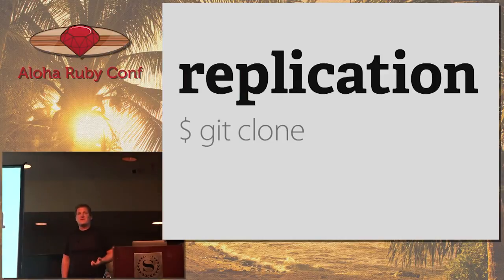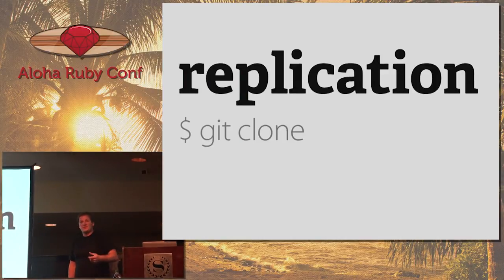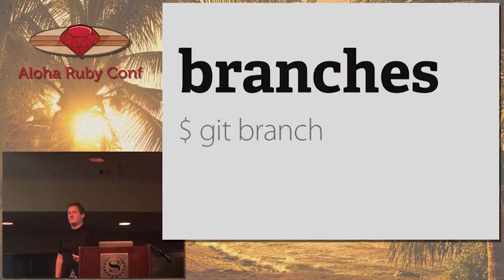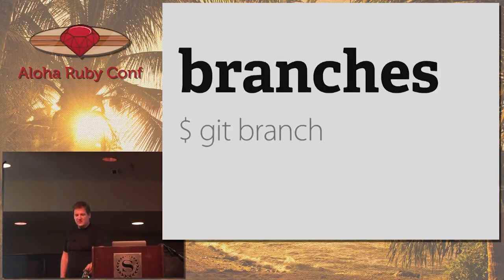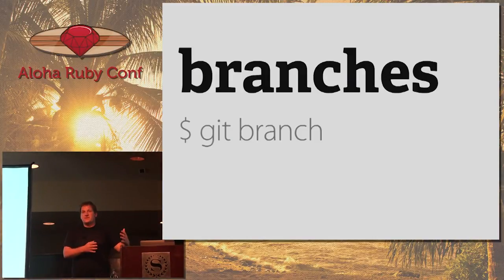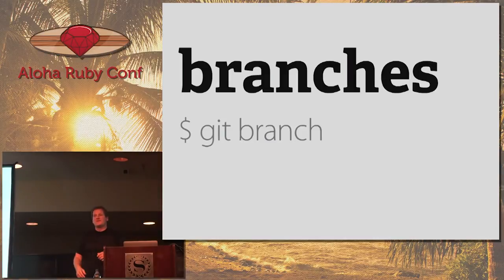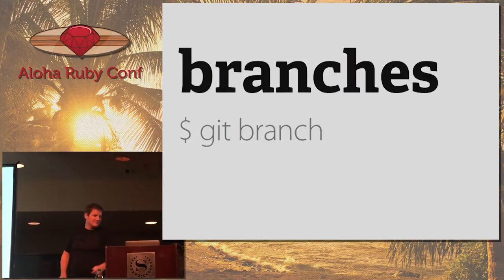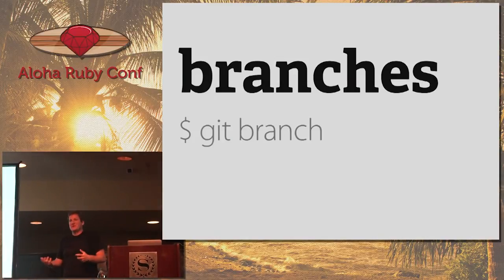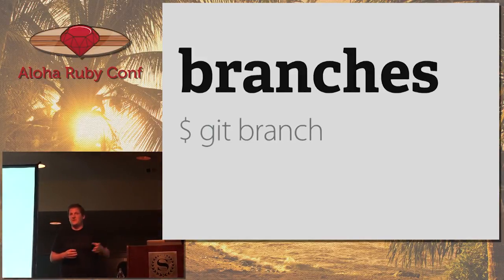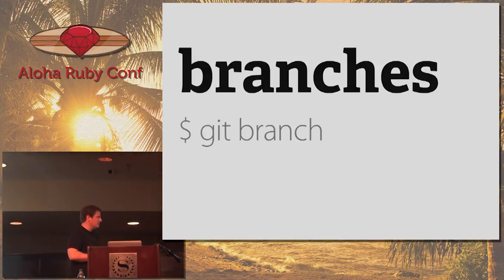We have replication built in. If you have a read-heavy app, it's easy to distribute the load — just clone the repo to a bunch of other servers and read from those. We also have branches, which was one of the things I was most excited about. I was working on a content management system and thought: how awesome would it be to build an alternate version of your site without publishing it live? In the database layer, you just make a branch, make your changes, and merge it back in when done. Imagine a recipe site where people could fork recipes, make changes, and merge them back in.